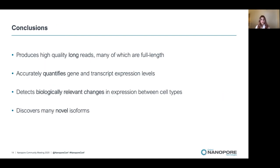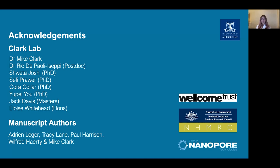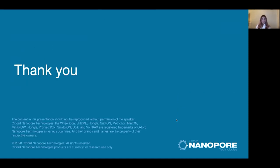In conclusion, from our study we found that direct RNA sequencing produces high-quality long reads, many of which are full length. It accurately quantifies both gene and transcript expression levels, detects biologically relevant changes in expression between cell types, and discovers many novel isoforms. I'd like to thank my lab — the Clarke lab at the University of Melbourne — the manuscript authors, and in particular my supervisor Dr. Mike Clarke. Thank you all for coming, and please leave any questions in the chat.